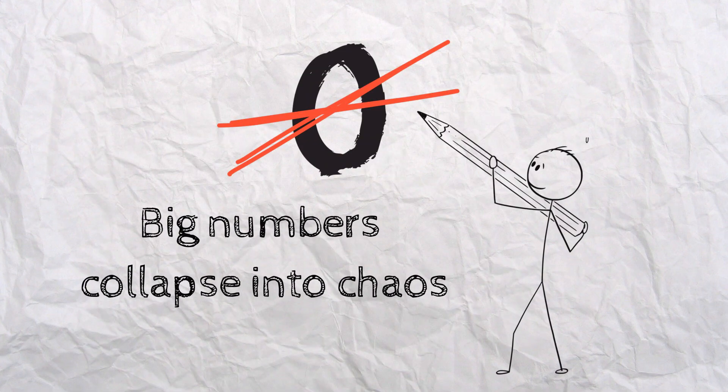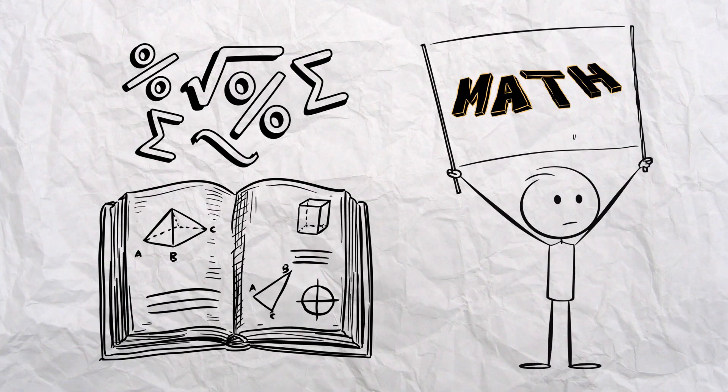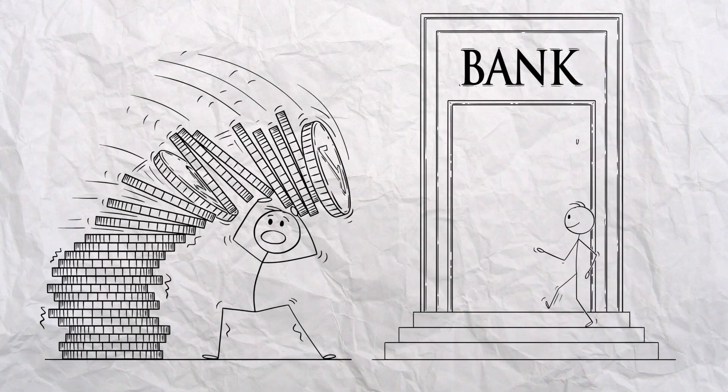Without zero, big numbers collapse into chaos. Mathematicians would need endless words and symbols just to represent large values. Simple calculations, like balancing your bank account, would take hours.